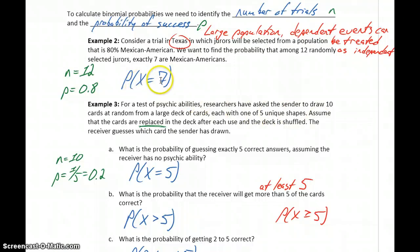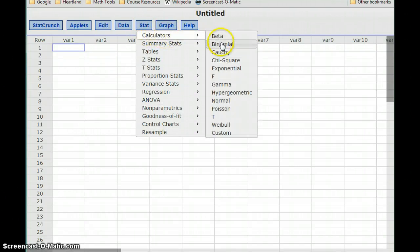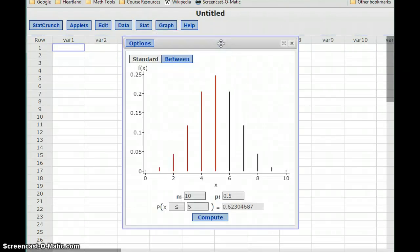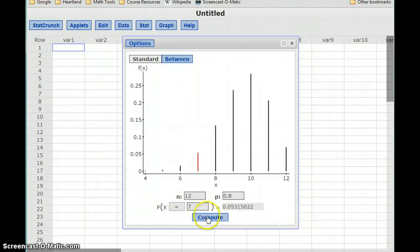So the probability that X is equal to seven, with our value of n set to 12, and probability of success equal to 0.8. So in StatCrunch, we'll select the Stat menu. And under Calculator, select Binomial. So in our first example, n is 12, p is 0.8, and we want X to be exactly equal to seven. So we see we have a probability of just over five percent, or 0.0532.